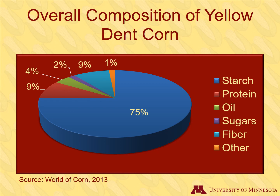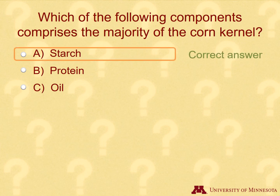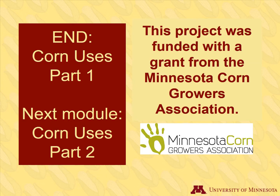When we examine the corn kernel as a whole, we can see the total composition of starch, protein, fiber, oil, and sugar. Starch composes the majority of the kernel, followed by protein and fiber. We have now covered the first two sections of our lesson. This is the end of part one of our two-part lesson on corn uses. To continue the lesson, please start the corn uses part two module, where we learn about the primary uses of corn.